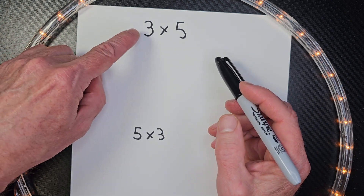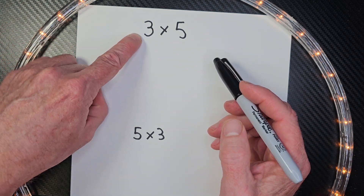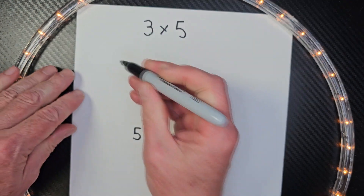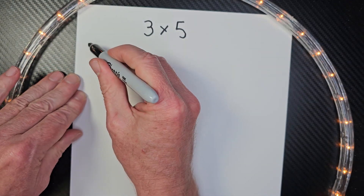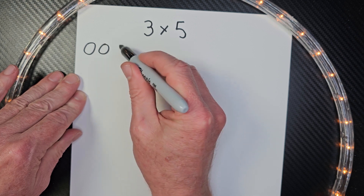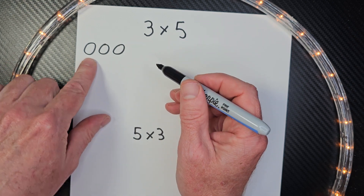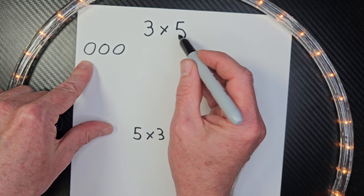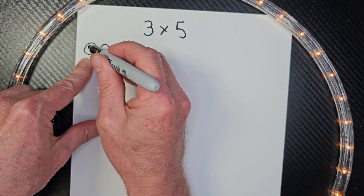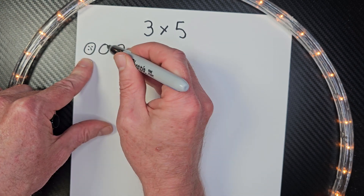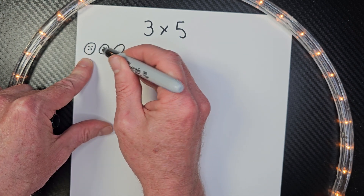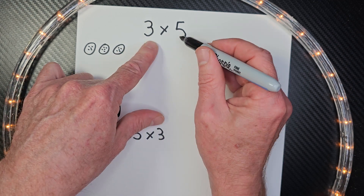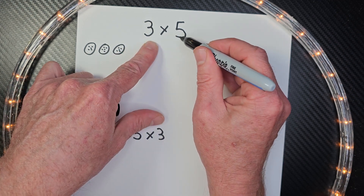So in our old school way, if we had three times five, I would basically just make three circles — one, two, three. And in each circle, that's like saying three groups of five, I might put five little dots in each one. This is how I would draw out three times five.